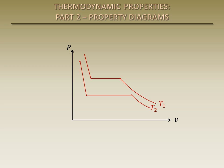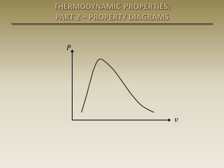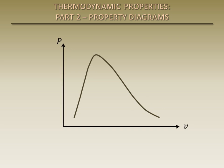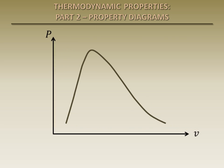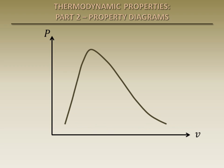Just as we did with the T-V diagram, we can draw a line through the saturated liquid and saturated vapor states. The various regions on the P-V diagram are the same as those on the T-V diagram.